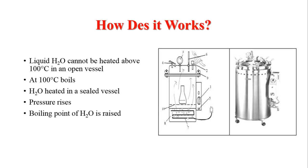How does it work? The autoclave is a steel chamber filled with water. The water boils at 100°C and starts producing steam. When we close the chamber, the steam builds up pressure. This high-temperature, high-pressure steam can penetrate into cells as well as spores and denature the proteins inside them.